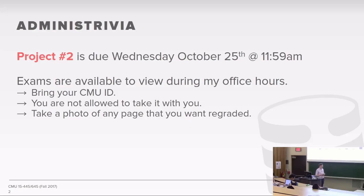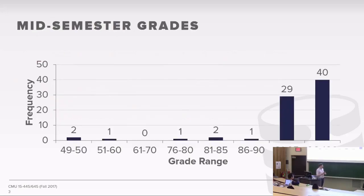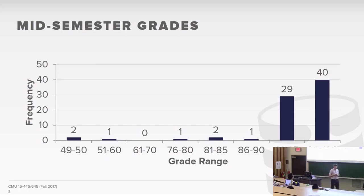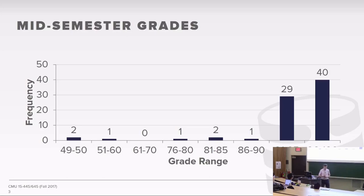At the half of the semester, we're skewing very high on people doing very well in the course. This doesn't surprise me because most of the grades at this point have been the homeworks and only the first project. There are still three other projects due after the midterm, and there would be fewer homeworks. At this point in the course, we're switching to more development, so you should plan accordingly.